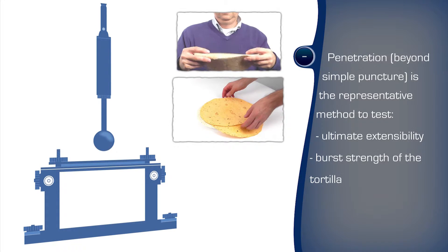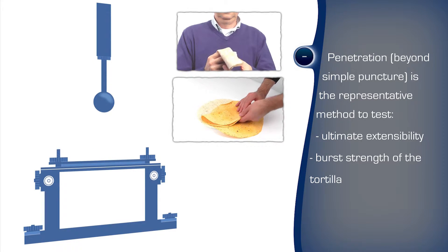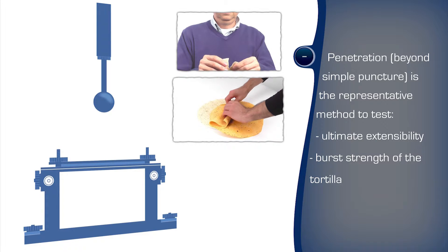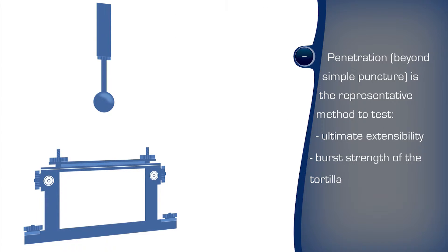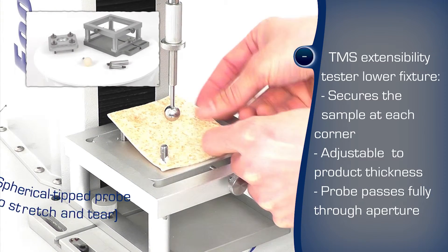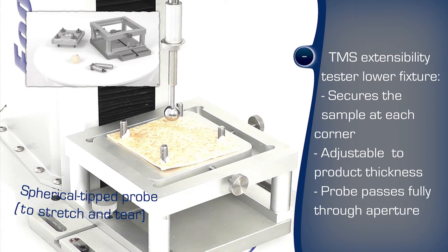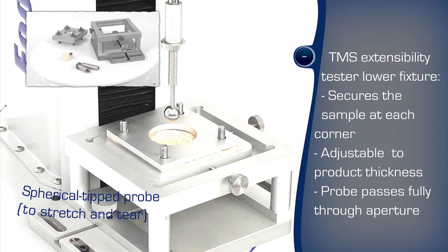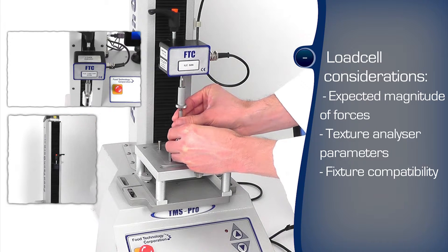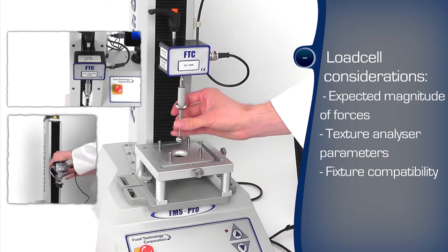A tension method is the representative test for a flour tortilla's desired behavior. A consumer will stretch the product with the expectation that it will not tear or break — this texture characteristic is termed extensibility. The texture analyzer is fitted with the TMS extensibility tester, a fixture designed to securely hold a sample of the flat bakery product between two plates, with a smooth-edged circular aperture through which the sample can be stretched.